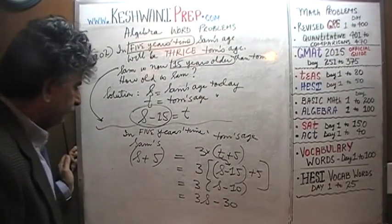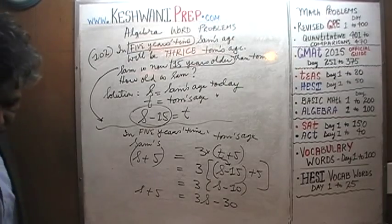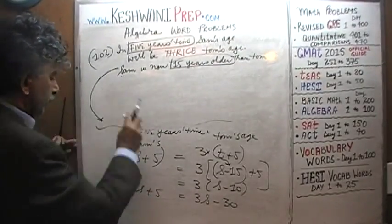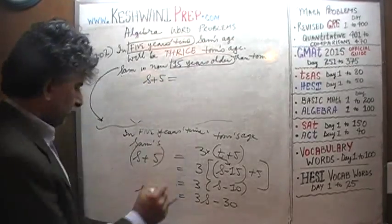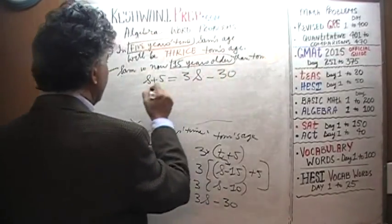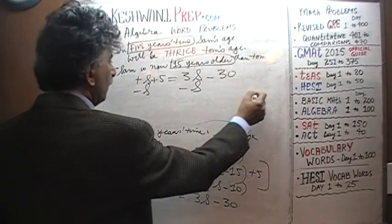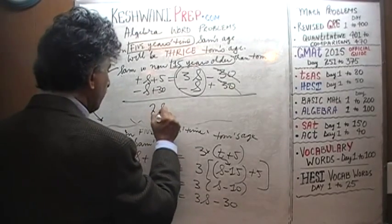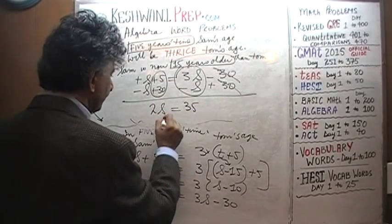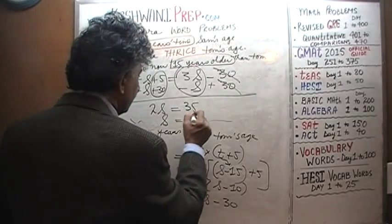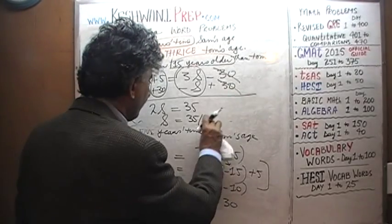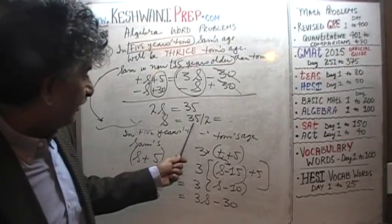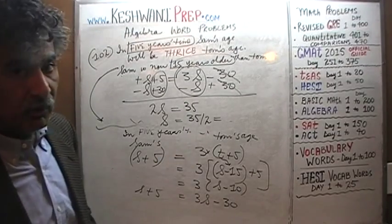Opening the parentheses: s + 5 = 3s minus 30. Subtract s from both sides: 5 = 2s minus 30. Add 30 to both sides: 35 = 2s, so s = 35 divided by 2. Since 35 is not even, this is not a whole number — it's 17 and a half. That's how old Sam is today.